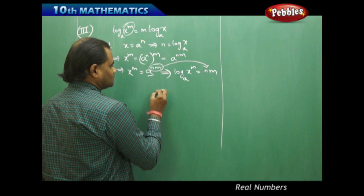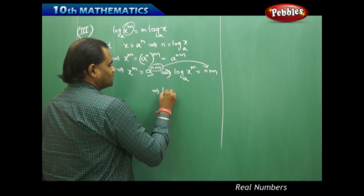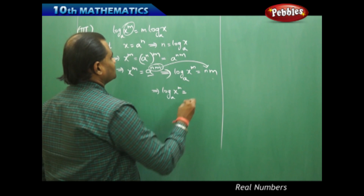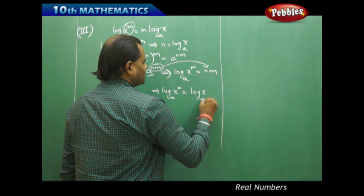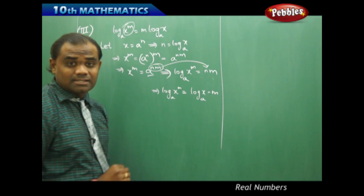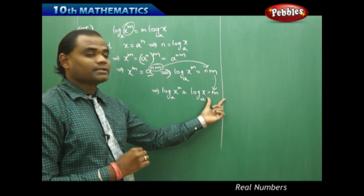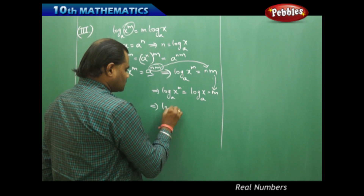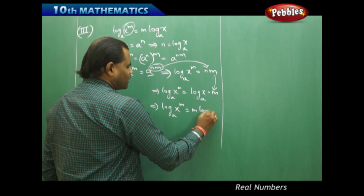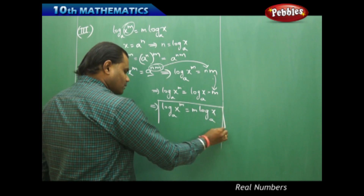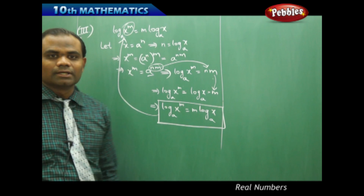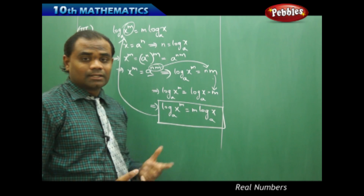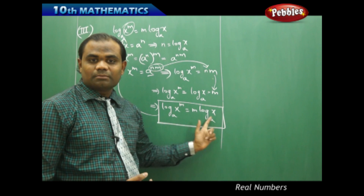Now, substituting gives me that log(x^m) to the base a equals nm. What is n? I have n as log x to the base a. Since I don't have any value for m, I just take m as it is. When rearranged, this gives me log(x^m) to the base a equals m·log x to the base a, thus proving the third law of logarithms using exponents.